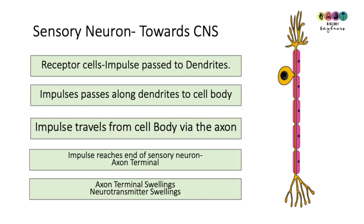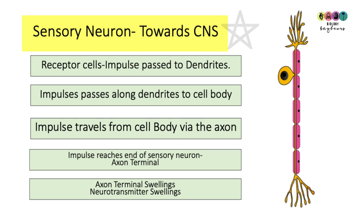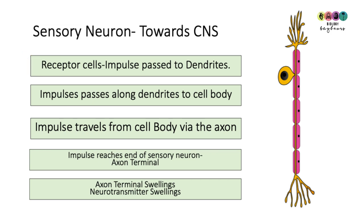Sensory neurons send electrical impulses towards the central nervous system — just think of sensory as sending towards the central nervous system. It all started with those receptor cells that detected a stimulus, and this resulted in the generation of an electrical impulse.